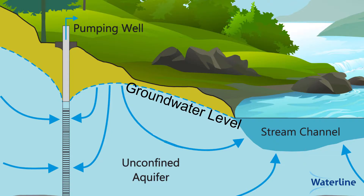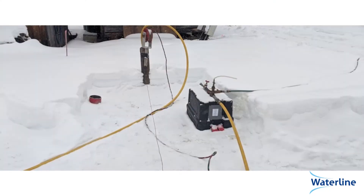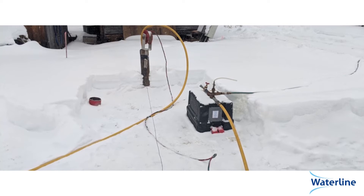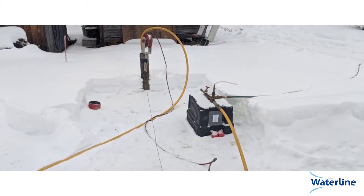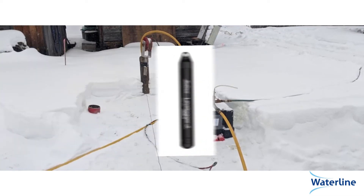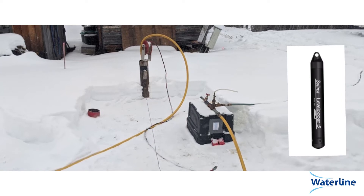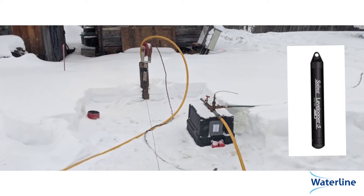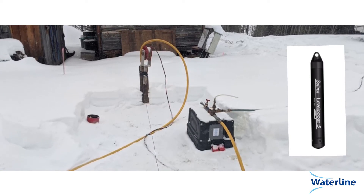For each private water supply well, a baseline yield test is conducted to document the drawdown of the groundwater level in the well in response to pumping at a sustained constant rate for 60 minutes. A flow control valve is used to maintain a constant pumping rate and, if the well is accessible, a pressure transducer with a data logger is installed into the well to regularly monitor the groundwater level response to pumping.